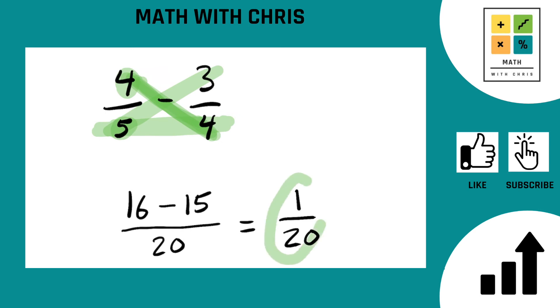So our answer is 1 twentieth. That cannot be simplified as a fraction. That's completed, finito, nice and easy. 4 fifths minus 3 fourths equals 1 twentieth. No problem, we nailed it.